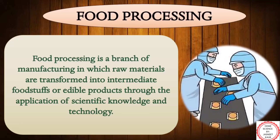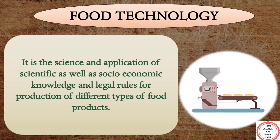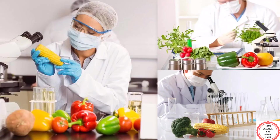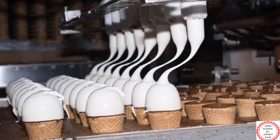Moving on to food processing as a defined term: it is a branch of manufacturing in which raw materials are transformed into intermediate foodstuffs or edible products through the application of scientific knowledge and technology. Food technology is the field which deals with socio-economic knowledge as well as legalities for the production of different types of food products. Food manufacturing refers to the manufacturing of food, keeping all the principles of food technology in mind to meet the diverse needs of a growing population.